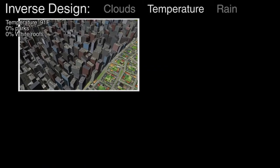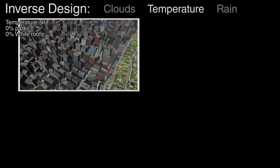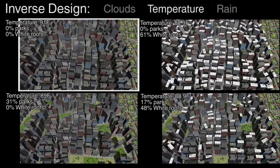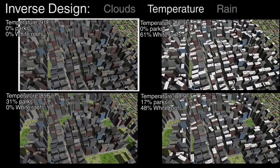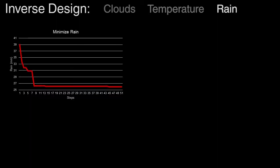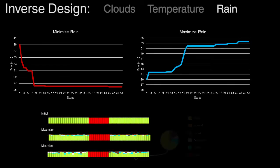In this example, we use our system to discover how to alter a given procedural model to reduce the temperature by creating additional parks, by changing the albedo of the building's roofs, or by both. Finally, we use our system to alter the land use of the surroundings of the city in order to decrease or increase the rain in a local area.